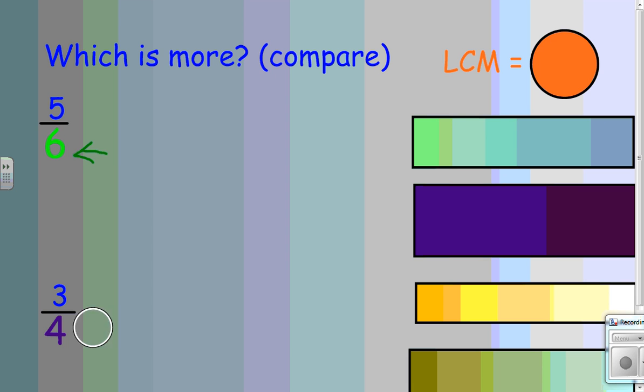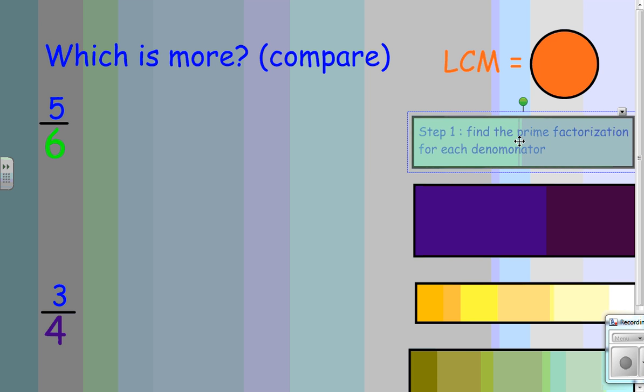Now, what I'm going to have to do is follow a series of steps to find the least common multiple of these different denominators. Step number one, find the prime factorization of each denominator.